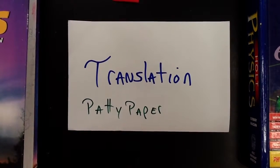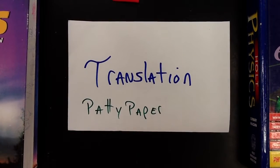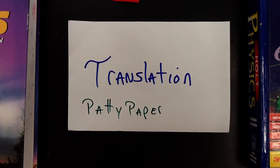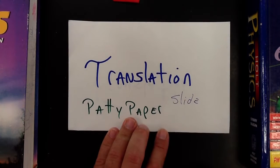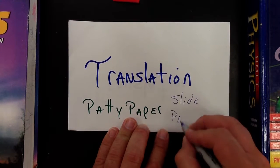We are going to do a translation using patty paper to demonstrate what happens. Patty paper is the paper in between hamburger patties. Remember that a translation is a slide and that we are going parallel.